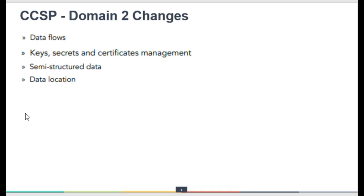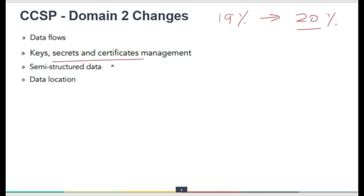Domain 2 is introducing data flow. The weightage of this domain has increased by 1 percent and now remains at 20 percent. What is being added here? The data flow will go hand in hand when discussing the data lifecycle and data dispersion. Key secrets and certificate management are new topics — certificate management was not discussed at all earlier in this exam. Semi-structured data and data locations, specific again in relation to data dispersion and data flow — though these were discussed indirectly earlier, they are now being introduced officially.